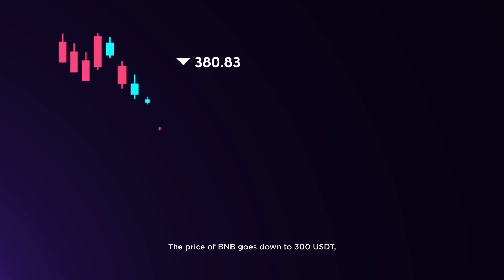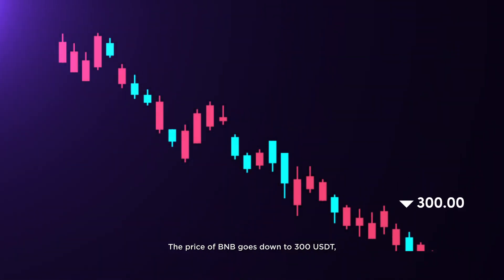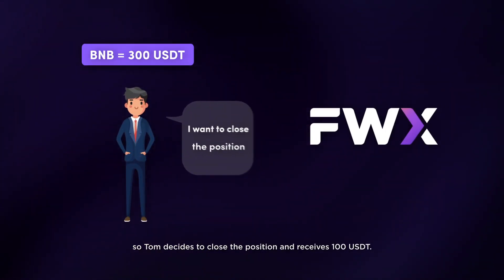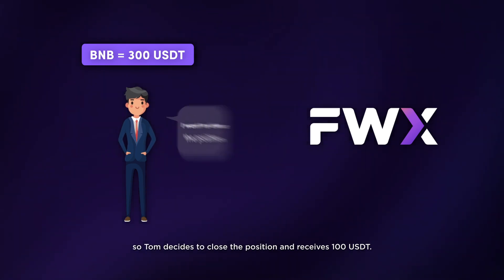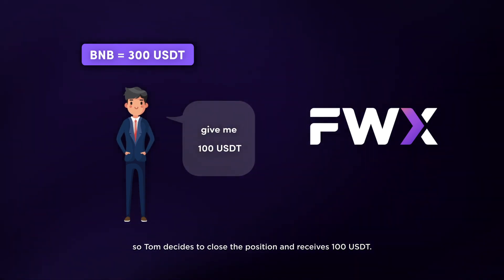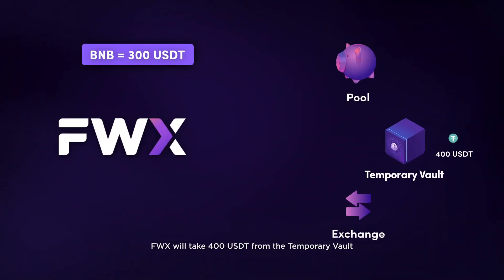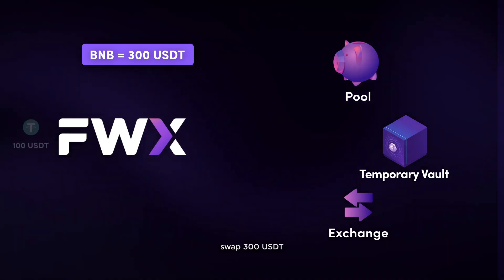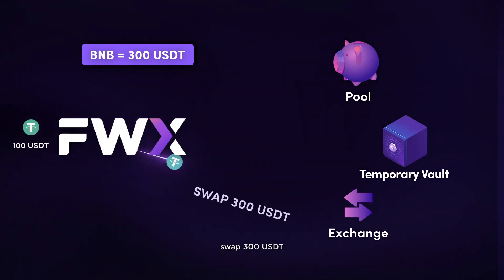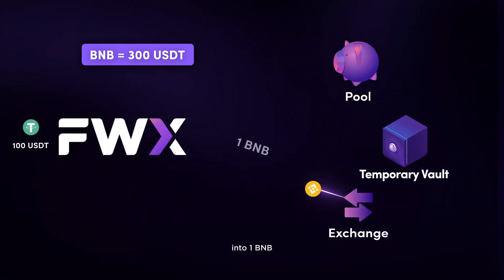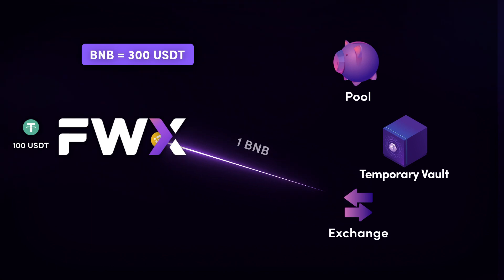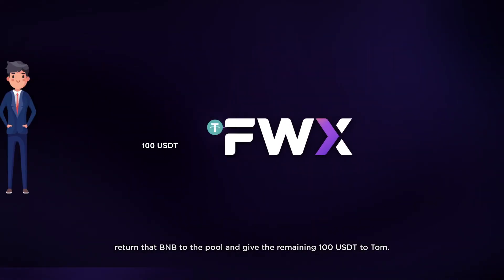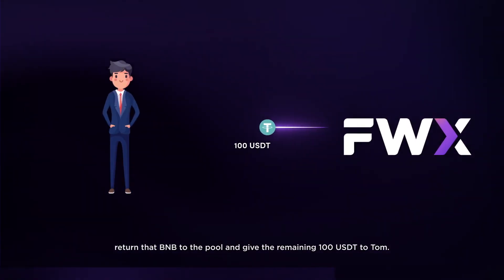The price of BNB goes down to 300 USDT, so Tom decides to close the position and receives 100 USDT. FWX will take 400 USDT from the temporary vault, swap 300 USDT into 1 BNB, return that BNB to the pool, and give the remaining 100 USDT to Tom.